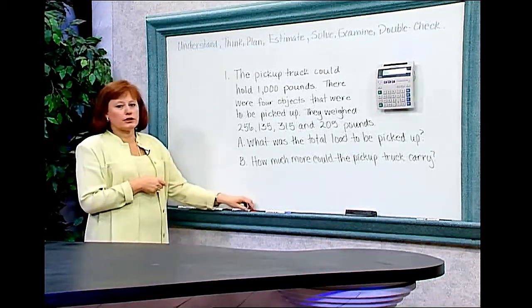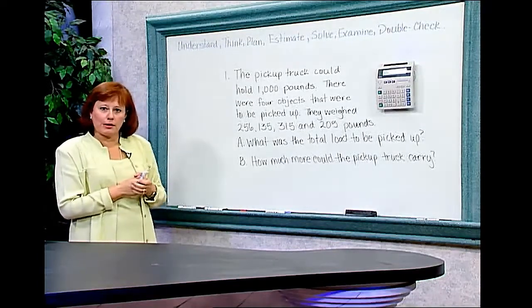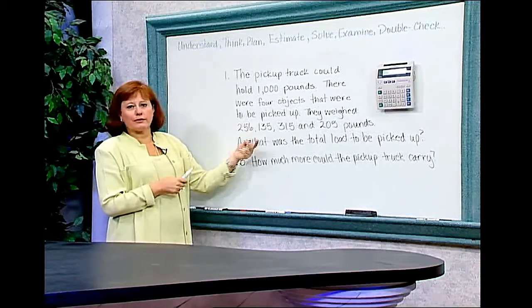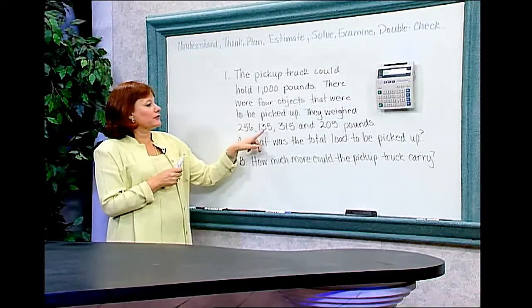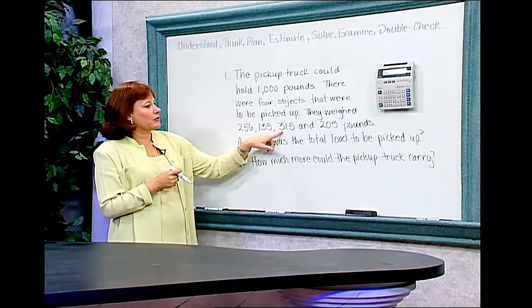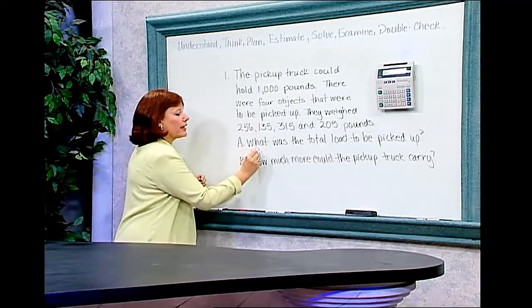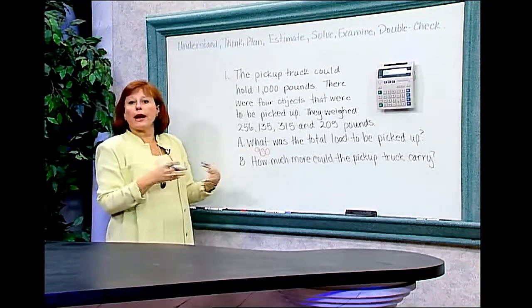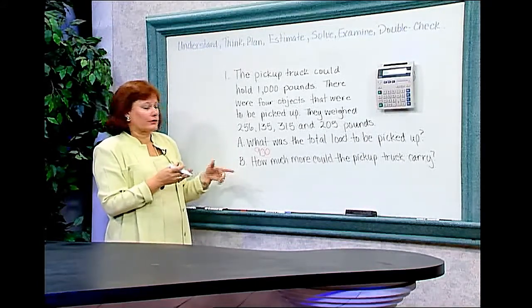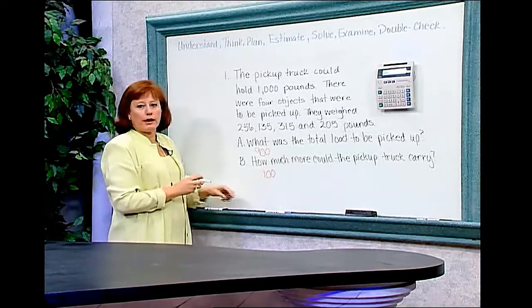Now I have a plan, so I want to do an estimate. When I look at my problem, I'm going to do a very rough estimate to get an idea of what solution I might be expecting to find. 256 pounds is about 250 pounds, and 135 pounds is close to 150 pounds. So 250 and 150 would be 400 pounds. 315 would add about another 300 pounds, so that would be 700 pounds. And 205 would make that about 900 pounds. So I'm going to make a little note down here that says I'm expecting my estimate to be about 900 pounds. If that's the case in the second problem, I know I can carry up to 1,000 pounds. So 1,000 pounds minus the approximate 900 pounds would leave about 100 pounds more that I could possibly pick up.